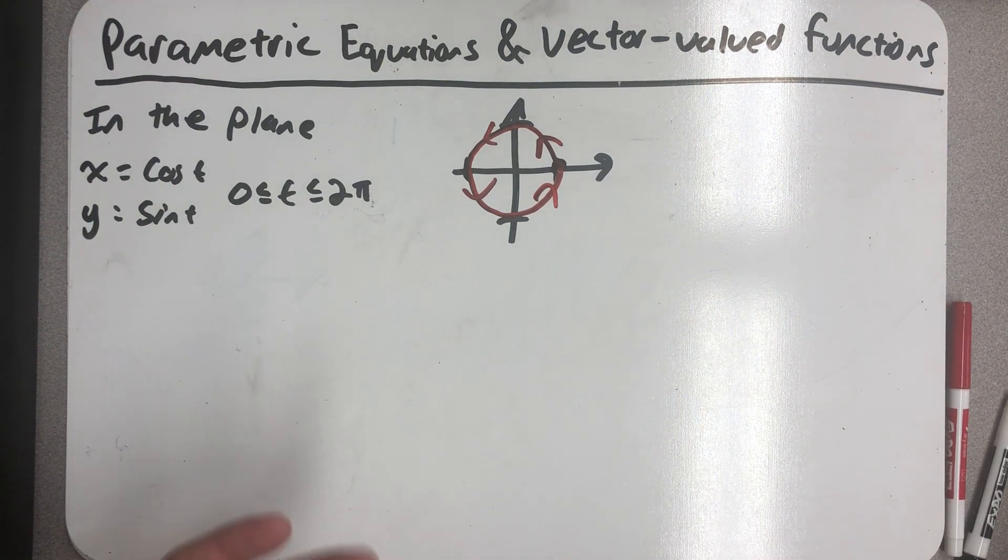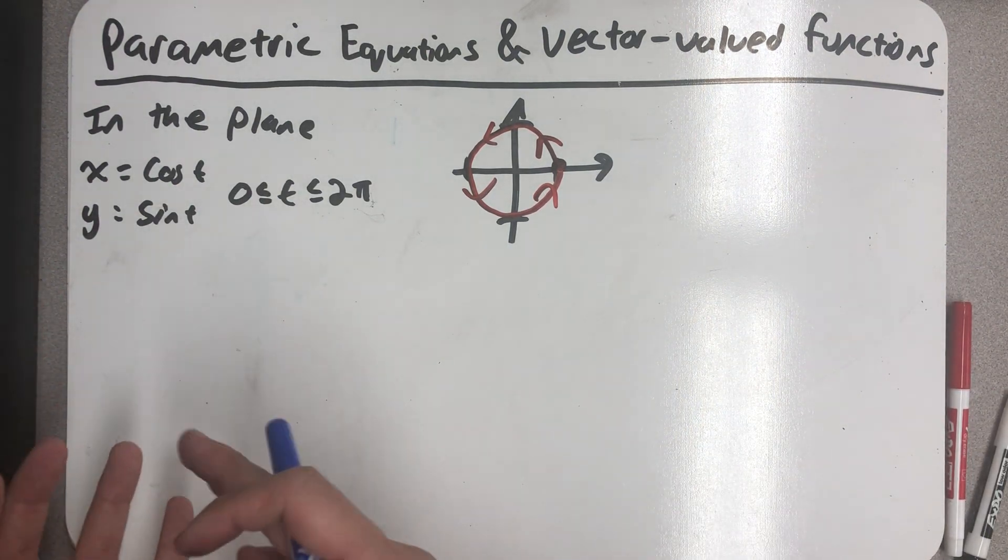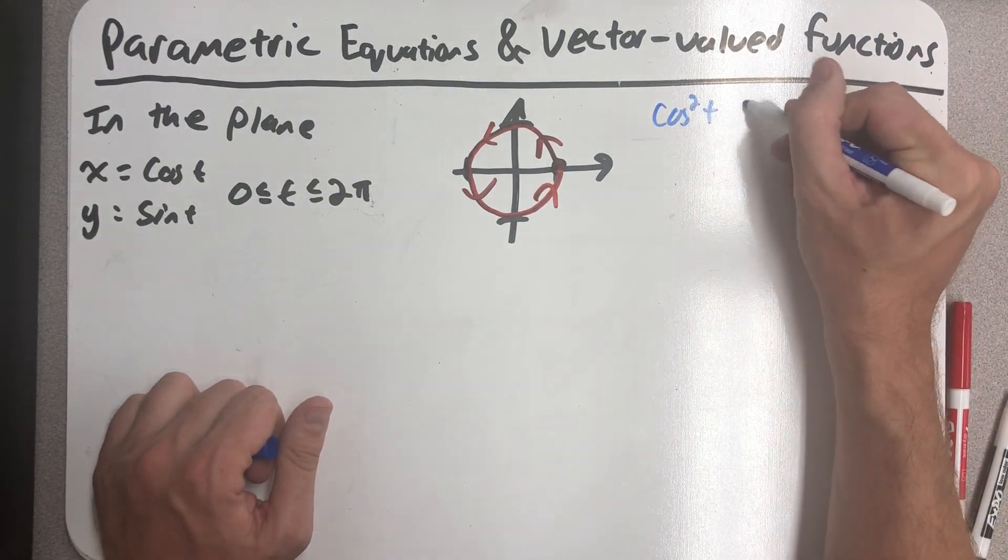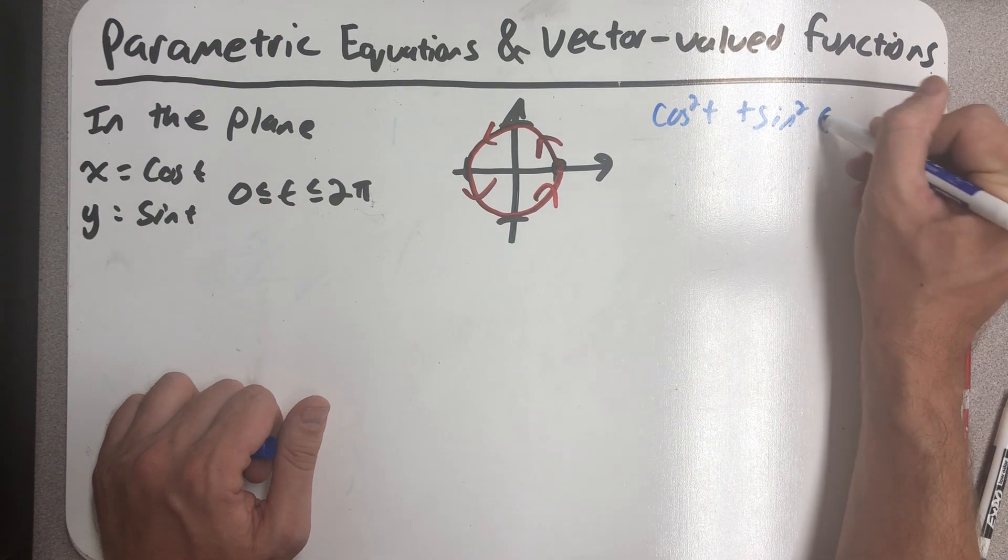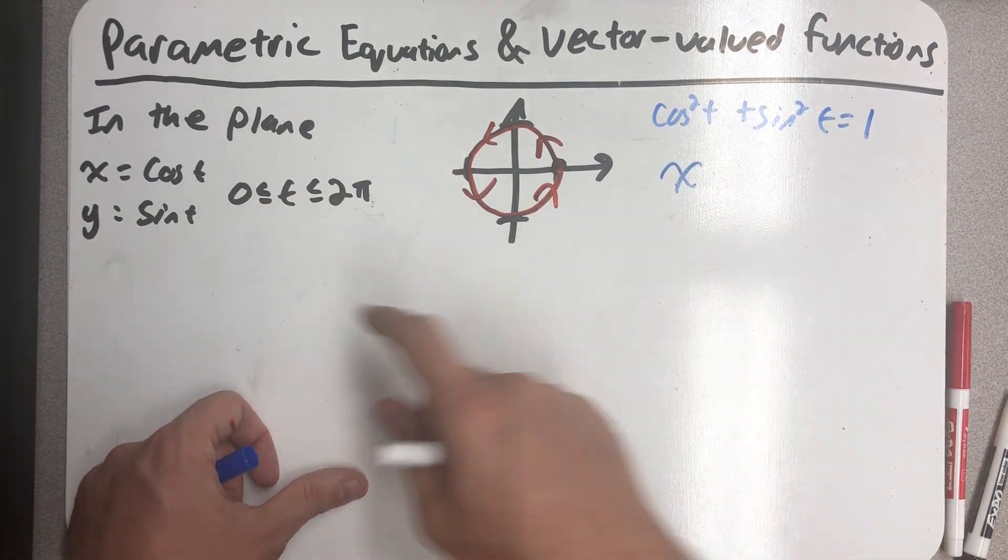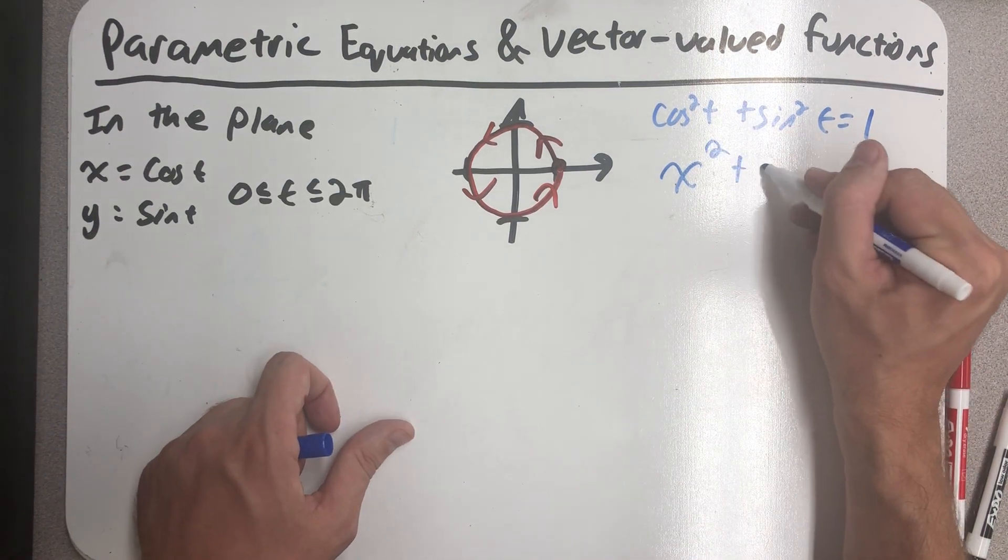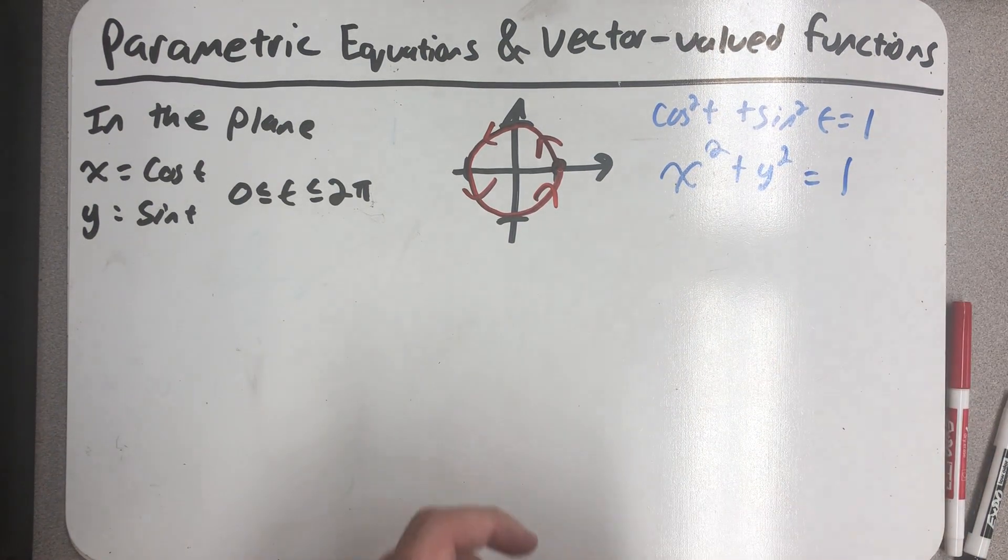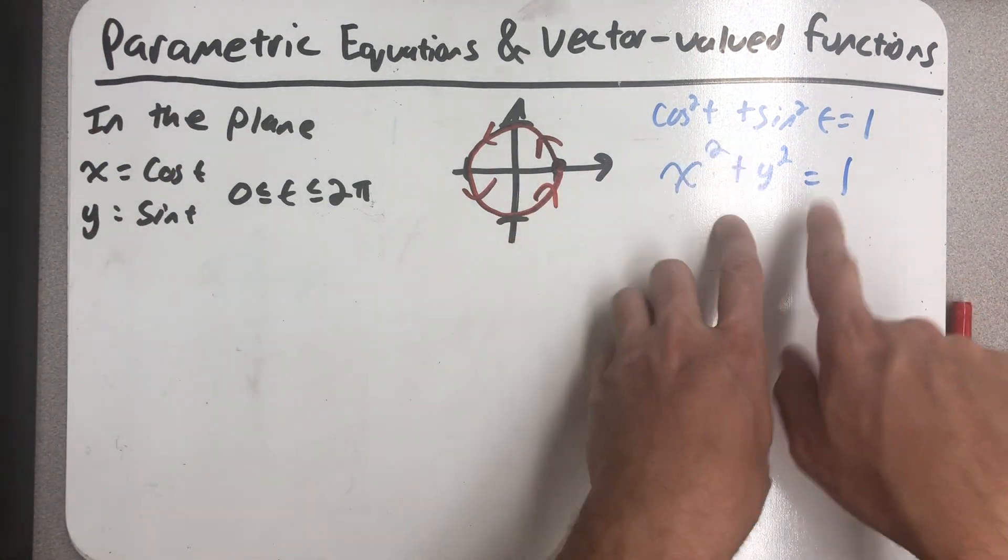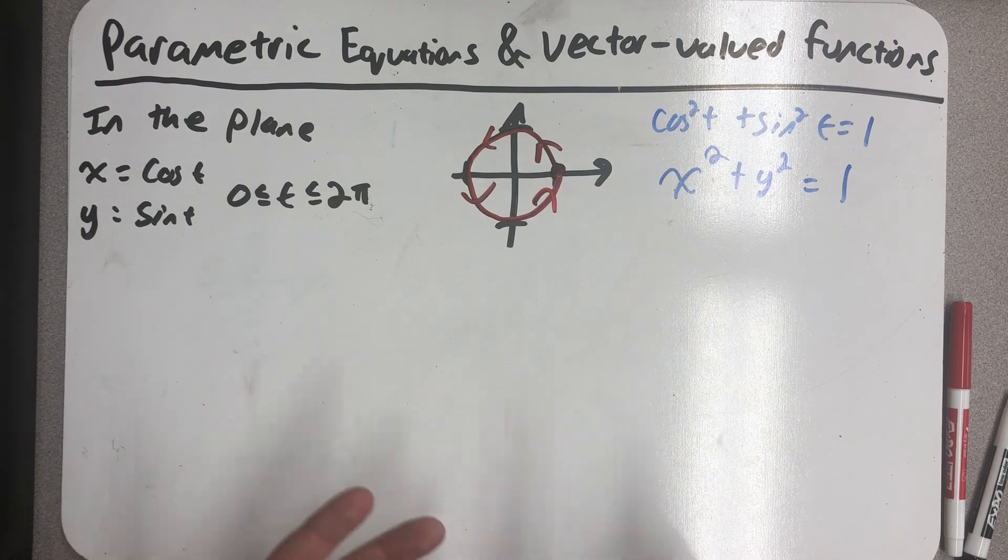The reason we know that this set of parametric equations satisfies the unit circle is that cosine squared plus sine squared is always 1. Well, cosine squared would be x squared, sine squared would be y squared, so x squared plus y squared is 1. So every ordered pair that comes from this set of equations satisfies the equation of the unit circle.